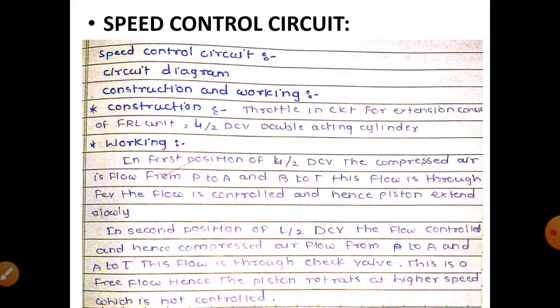Next, the second circuit is the speed control circuit. In speed control, we can control the speed of the actuator by using flow control valves. The speed control circuit has three types: the first is the meter-in circuit, the second is the meter-out circuit, and the third is the bleed-off circuit.